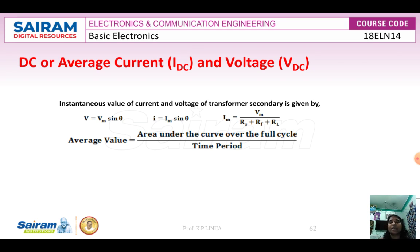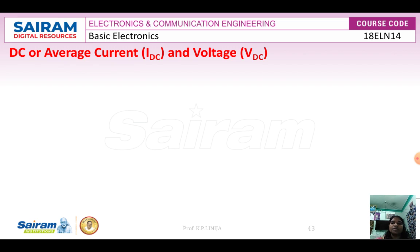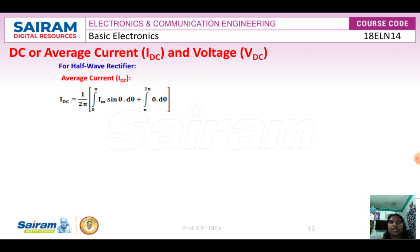Now, mathematically, the average value is equal to the area under the curve over the full cycle divided by the time period. For the half wave rectifier, we need to recall that only the positive half cycle gives output. From 0 to π is the positive cycle, and π to 2π is the negative cycle, where there is no output for a half wave rectifier. So IDC equals 1/(2π) times the integral from 0 to π of Im·sin(θ)dθ, plus the integral from π to 2π which equals 0.